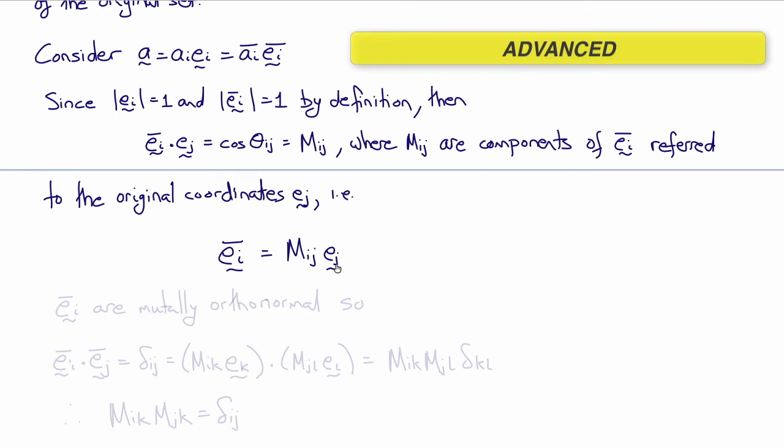Now ei bar are also mutually orthonormal, meaning they're also orthogonal and have unit length just like the original unit vectors. So therefore, ei bar dotted together must equal delta ij, the Kronecker delta, just as it was for ei and ej. Using this expression here, that gives us mi ek dotted with mj l el.